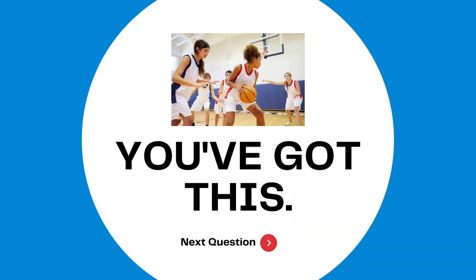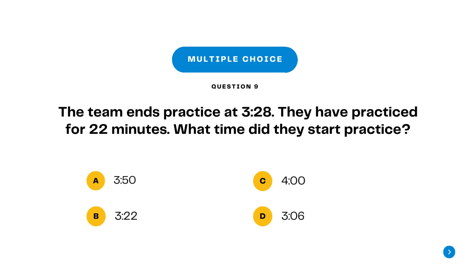Answer: The space that a liquid takes up is called liquid volume. Question 9 is multiple choice. The team ends practice at 3:28. They have practiced for 22 minutes. What time did they start practice? A. 3:30? B. 3:22? C. 4 o'clock? Or D. 3:06? Pause and play.